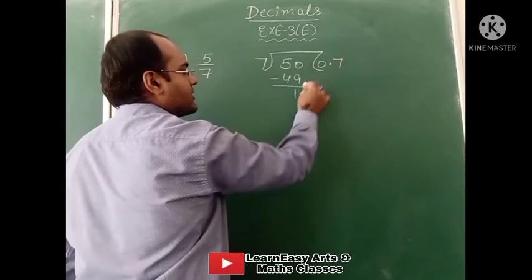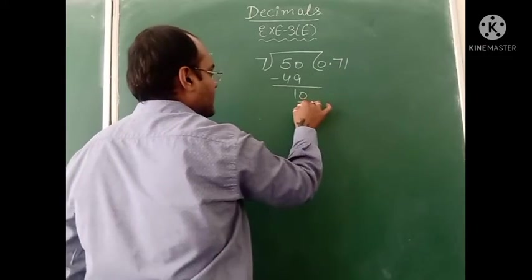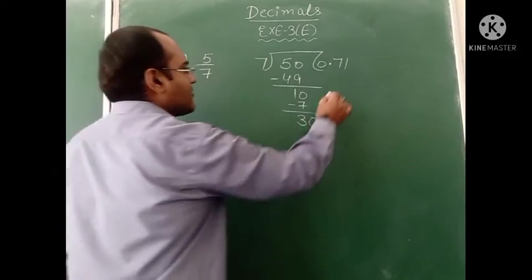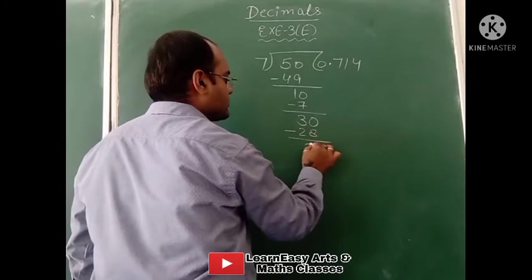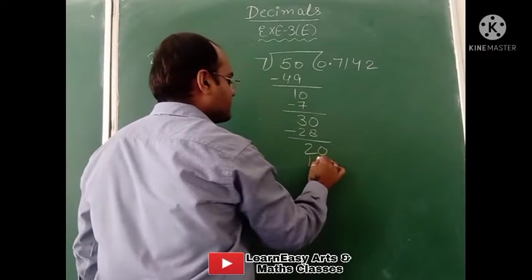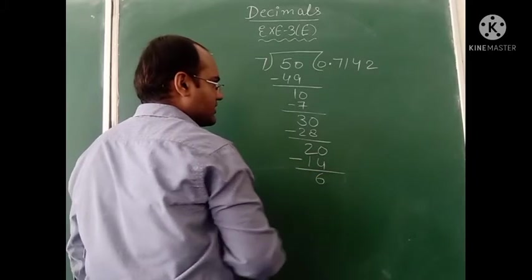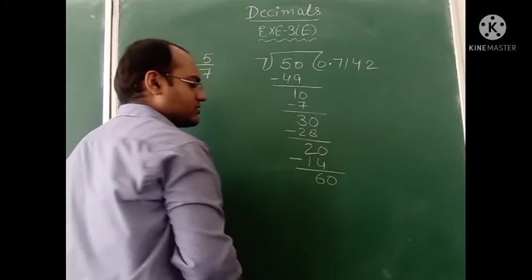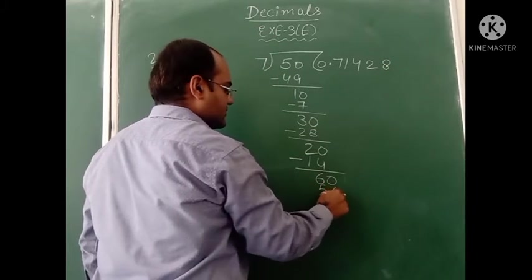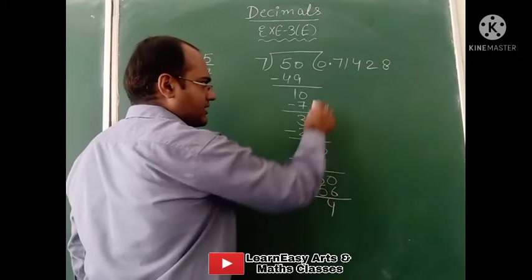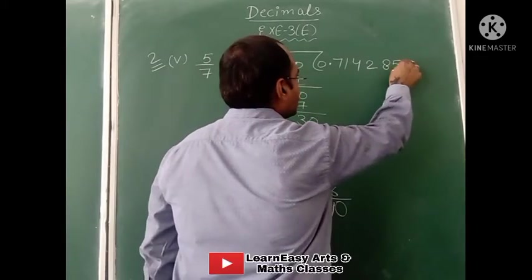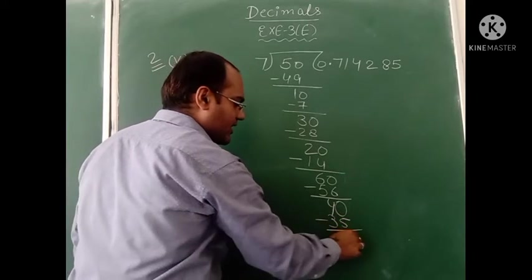Decimal is already in the answer, so we add 0. 7 times 1 is 7, remainder is 3. Add 0 again. 7 times 4 is 28, remainder is 2. Add 0. 7 times 2 is 14, on subtracting remainder is 6. Add 0. 7 times 8 is 56. On subtracting remainder is 4. One more 0 we take. 7 times 5 is 35. On subtracting we get remainder 5.